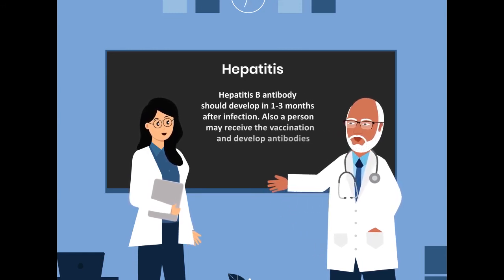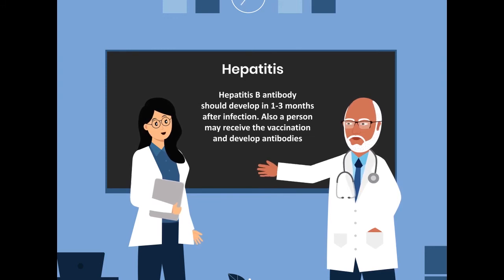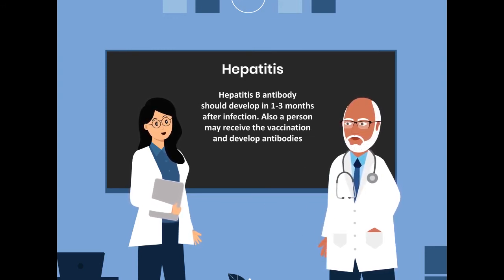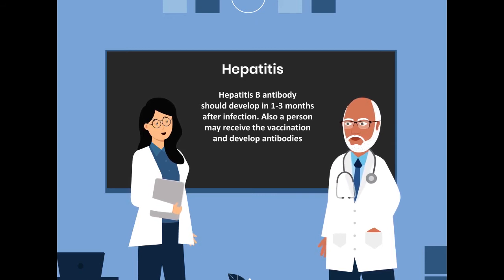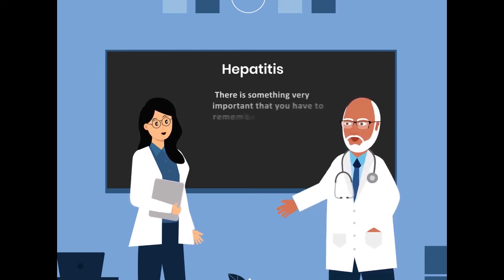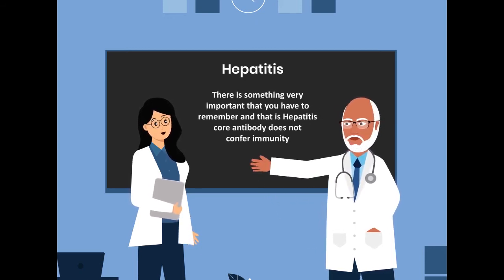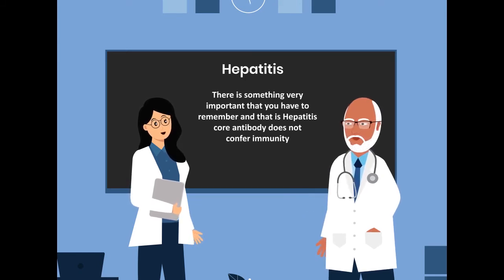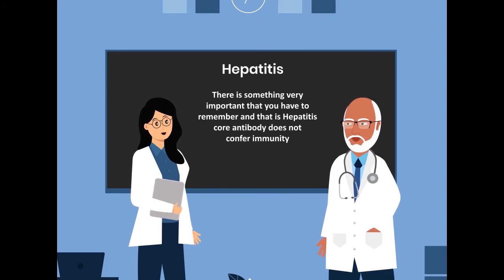Hepatitis B antibody should develop in one to three months after infection. Also, a person may receive the vaccination and develop antibodies. There is something very important that you have to remember, and that is Hepatitis core antibody does not confer immunity.